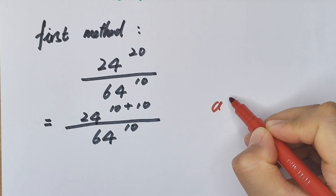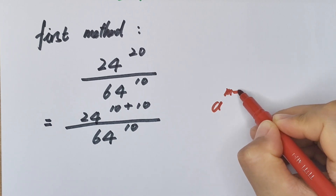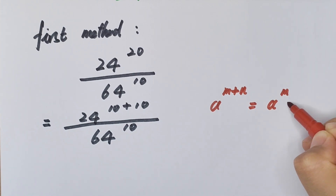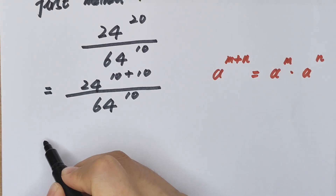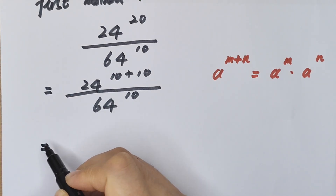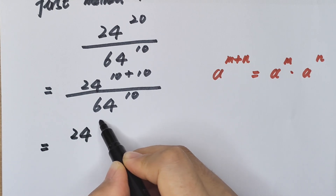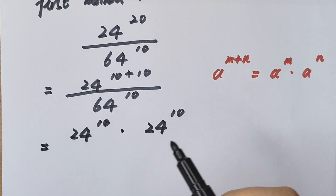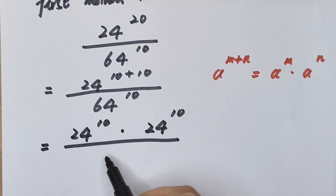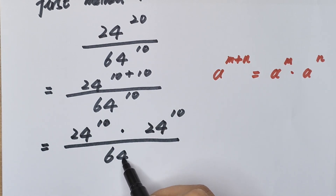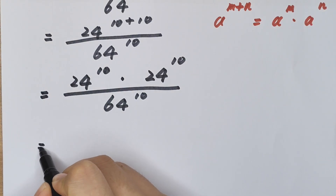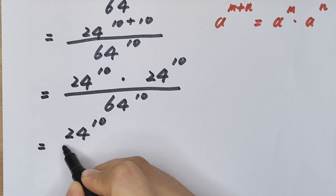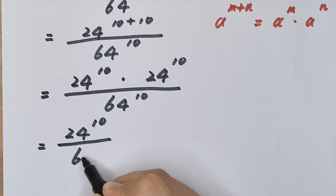We apply the formula: a to the power of m plus n equals a to the power of m times a to the power of n. So this equals 24 to the power of 10 times 24 to the power of 10, divided by 64 to the power of 10.